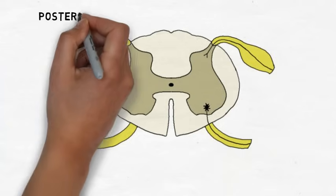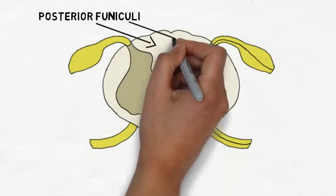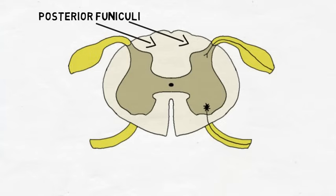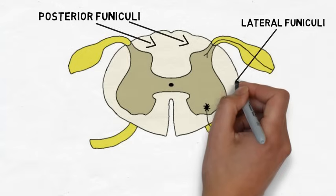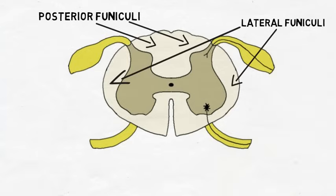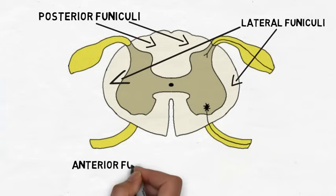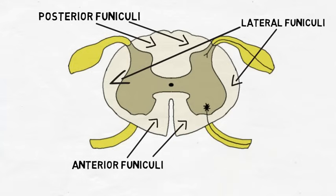The back of the spinal cord contains the posterior funiculi, which contain important pathways that carry information about touch and limb position to the brain. The lateral funiculi are found in the lateral portion of the cord. Important pain pathways are found here, as well as important descending pathways that are responsible for causing movement. The anterior funiculi contain various ascending and descending pathways.